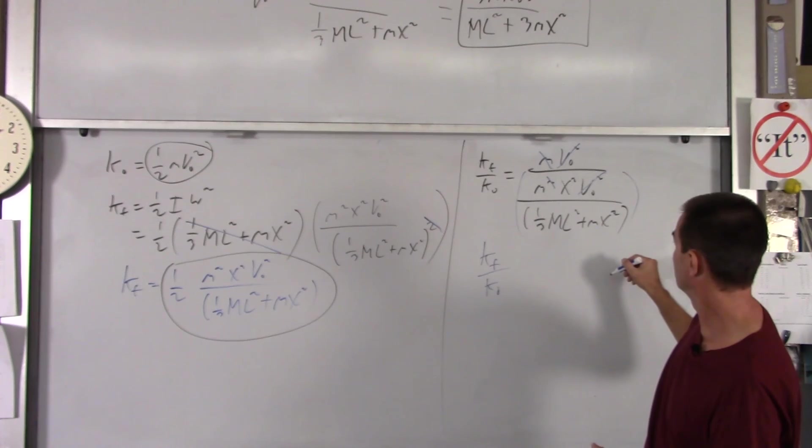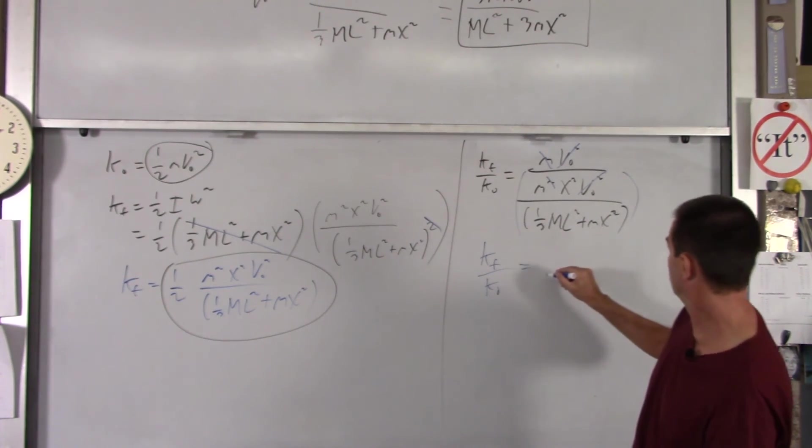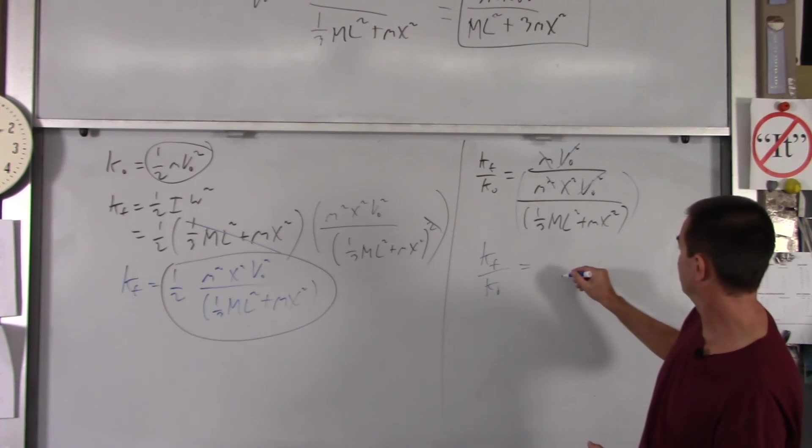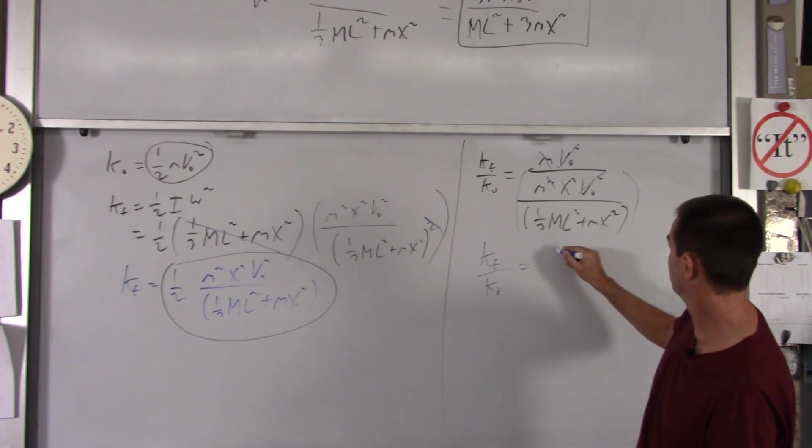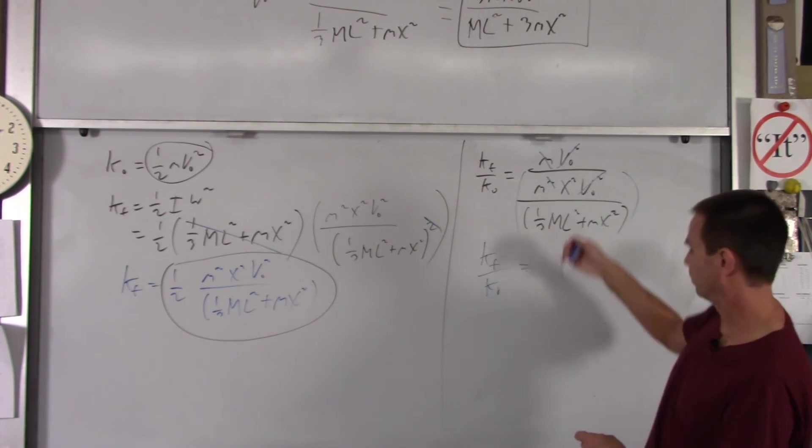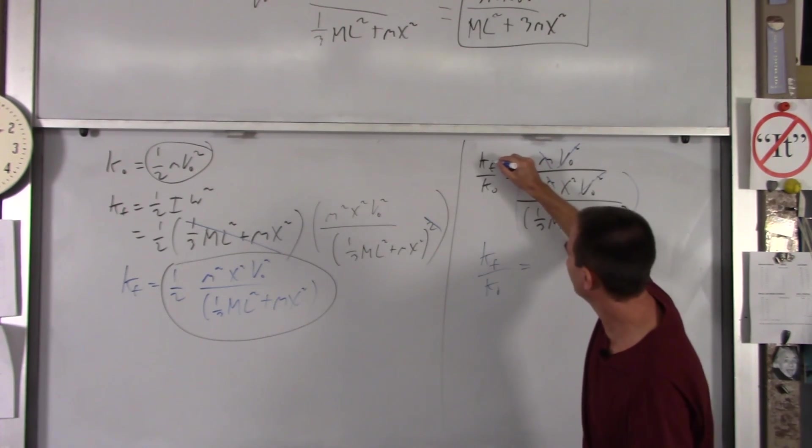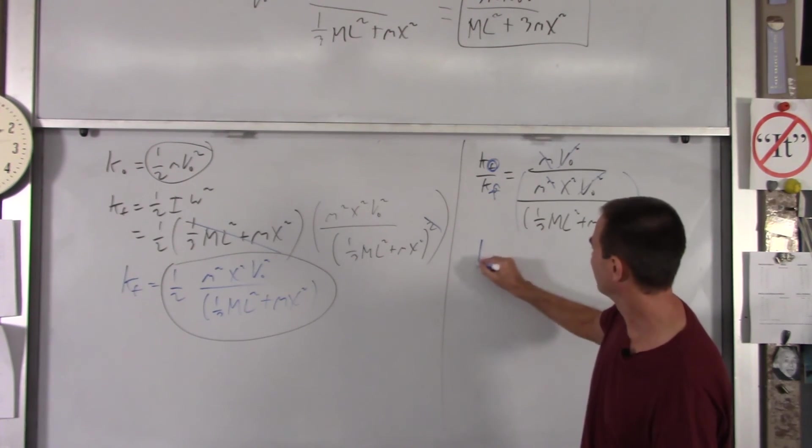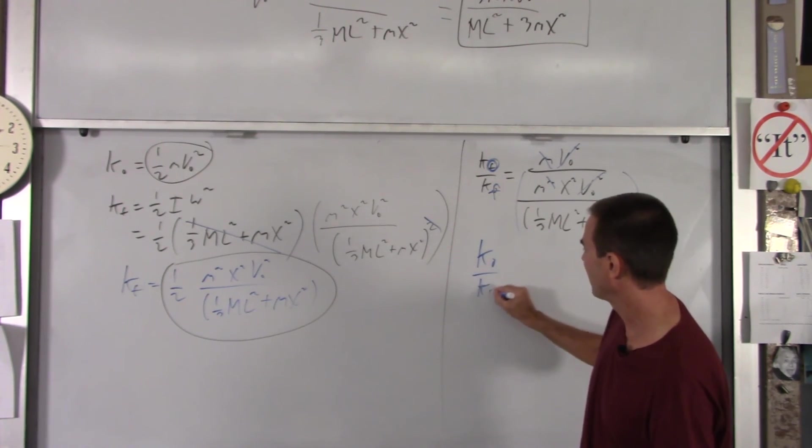And you're left with k-final over k-naught. Let's see. Oh, I have it reversed. I have k-naught, sorry guys, over k-final. I'm like, wait a minute, I'm not getting the right answer here. So we'll do it that way. We've got k-naught over k-final. I'll flip it over in a minute. I put k-naught first.